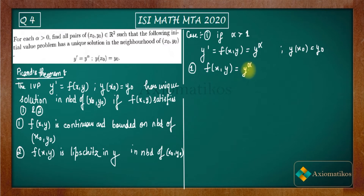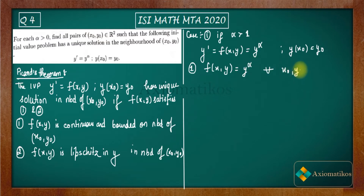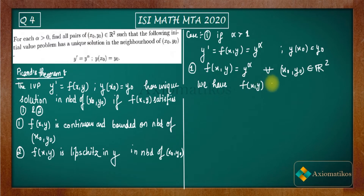Because alpha is greater than one, for any x₀ and y₀ you choose, you will always get f(x,y) = y^α to be bounded in the neighborhood of (x₀, y₀). It's a nice-looking function — you won't get unbounded behavior unless you have something like 1/y in the denominator, and since alpha is positive, for all (x₀, y₀) ∈ ℝ², f(x,y) is bounded.